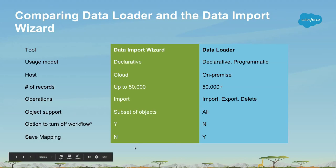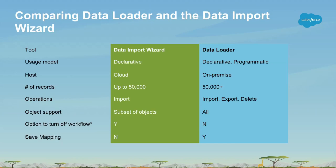Where does the tool live? Data import wizard can be accessed from the browser — it's a cloud-based tool. Data loader you install on-premise on your machine. Also keep in mind the volume of data: the data import wizard has a more friendly UI but is more limited in scope, up to 50,000 records. But if you have hundreds of thousands of records or more, data loader is the better tool because it handles batching behind the scenes.